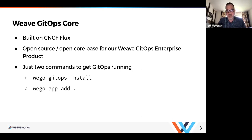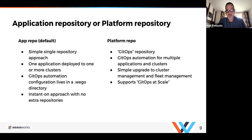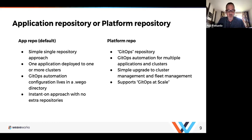There are just two commands required to get GitOps running. `gitops install` installs the GitOps runtime into a cluster, and `app add` adds an application definition and configures that application to deploy into the cluster. There are a couple of different models: putting your GitOps configuration into the same repository as your application, or having a separate platform repository. If you're a small team at level one, you probably want the same-repo model. For level two or three managing multiple applications across clusters, a platform repository makes more sense.